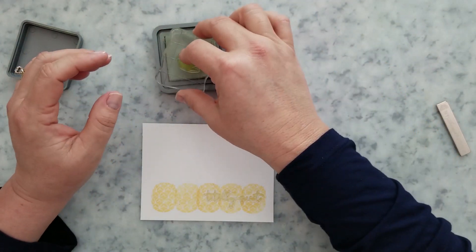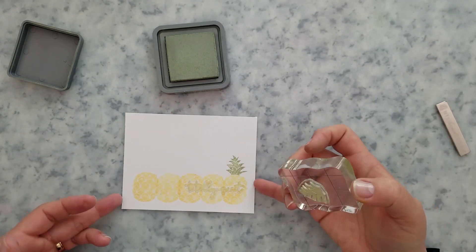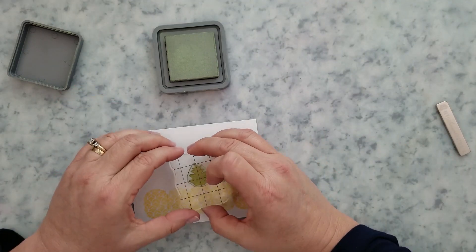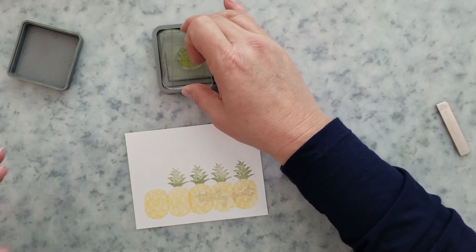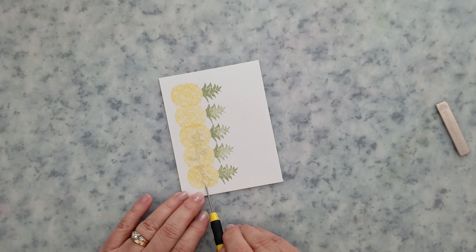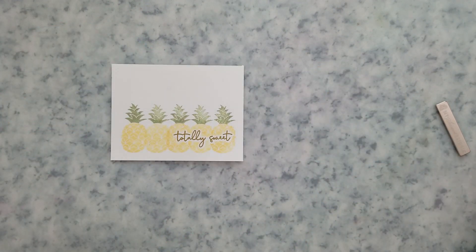Now I'm going to go ahead and stamp all the crowns using that Bundled Sage ink. If you haven't checked out the new release from Honeybee Stamps, I highly recommend you check it out. They have some amazing summertime goodies in this release. I absolutely love it.